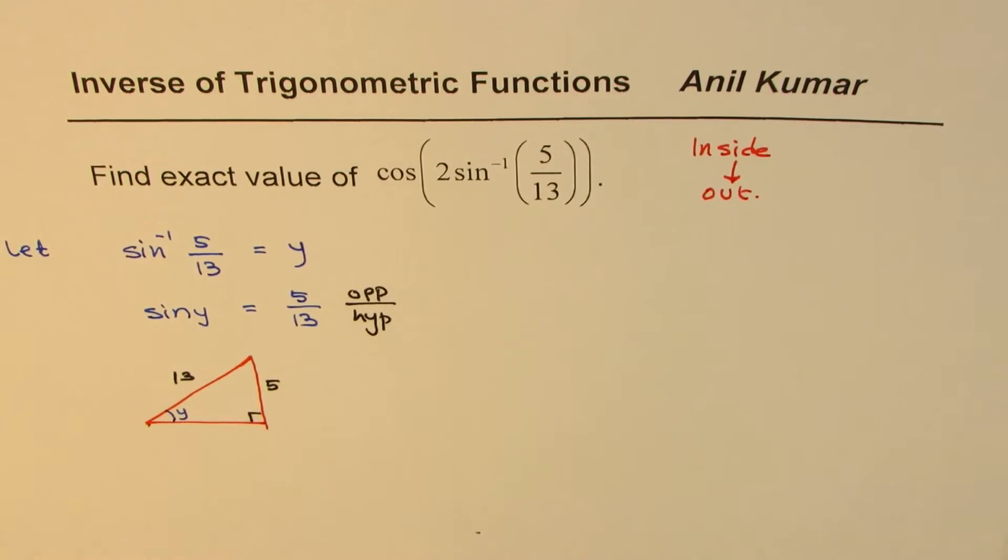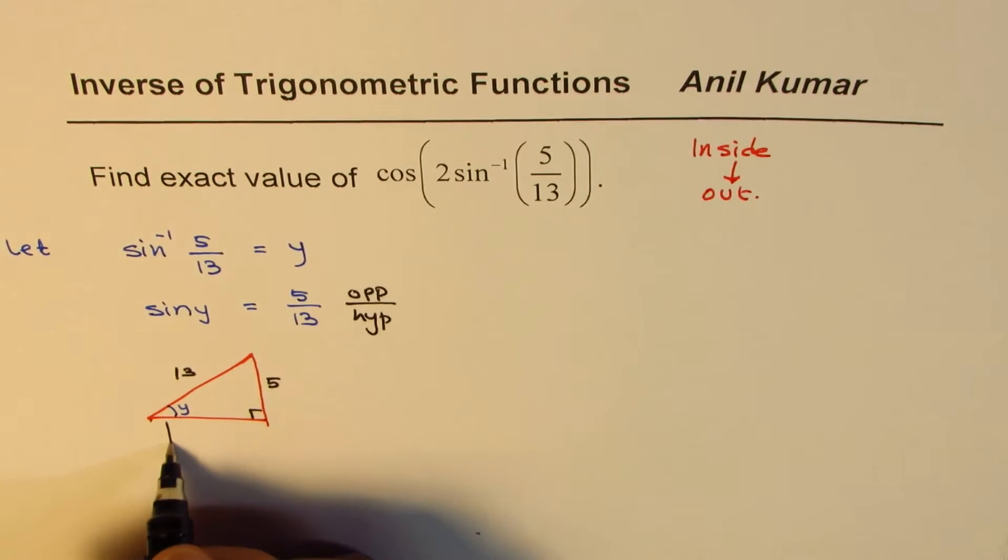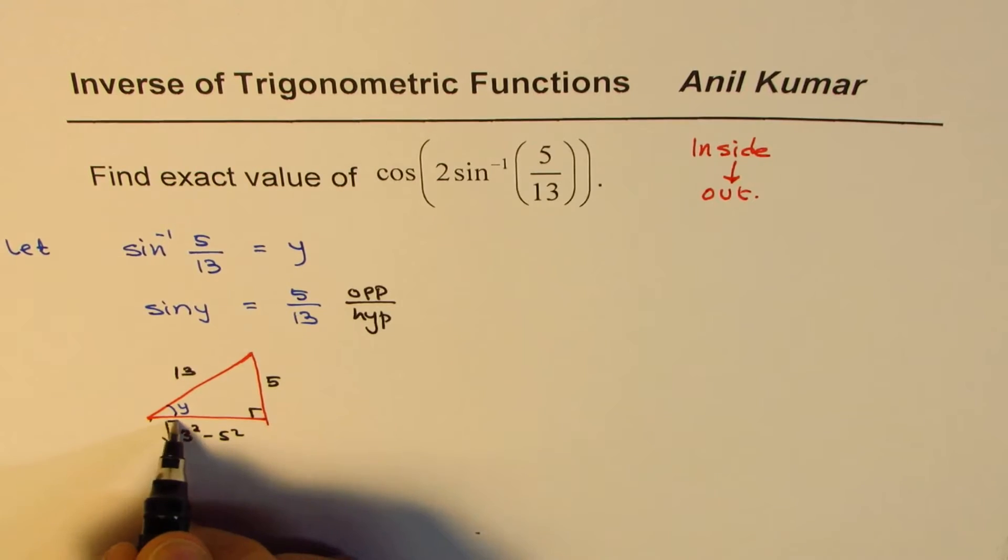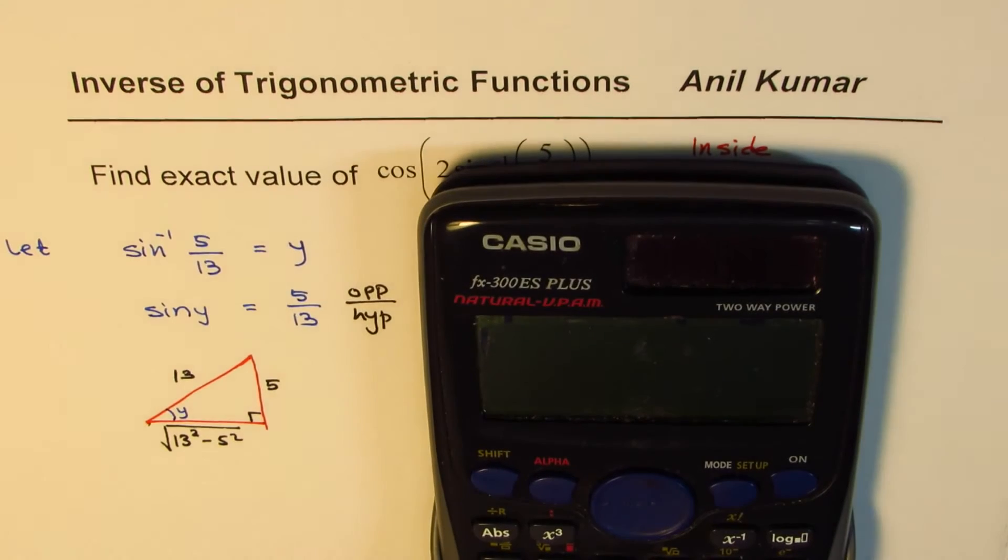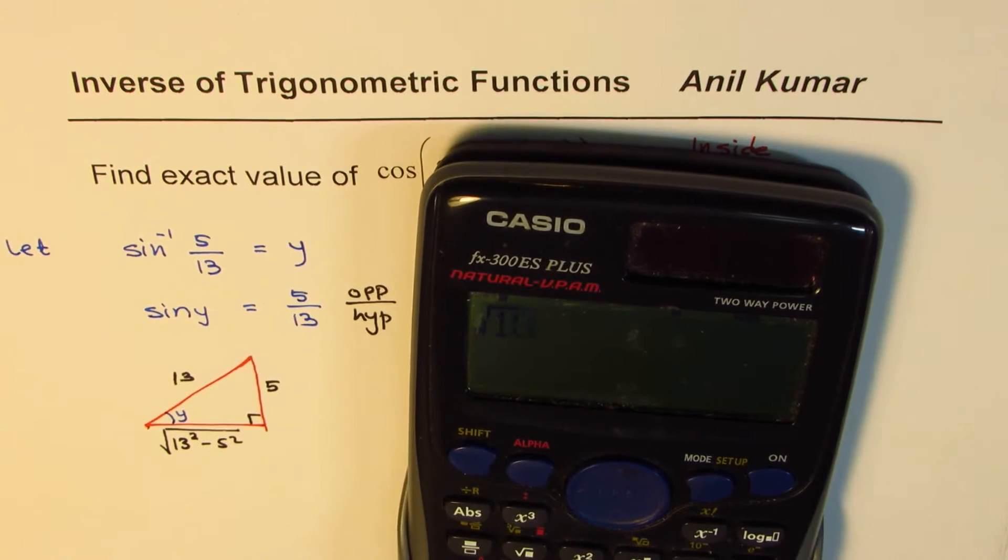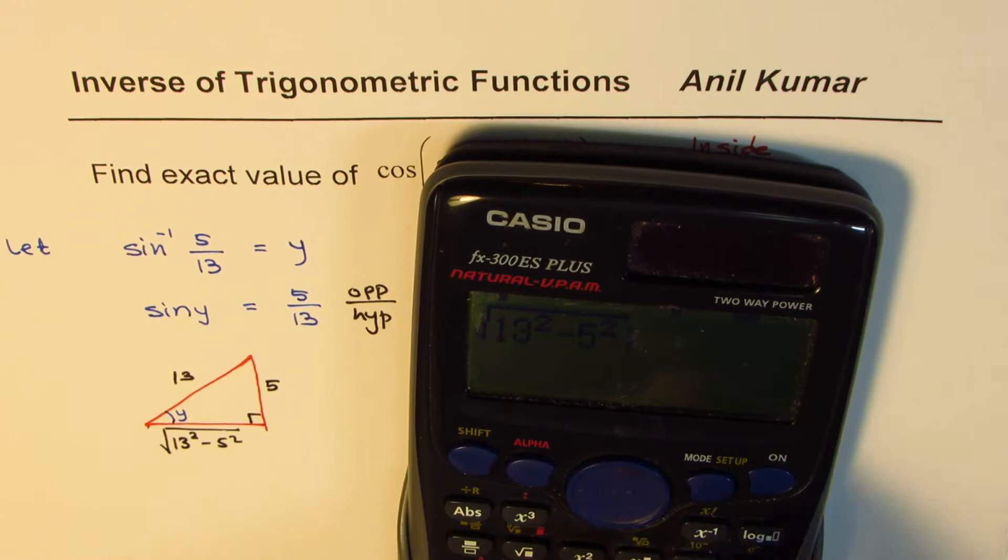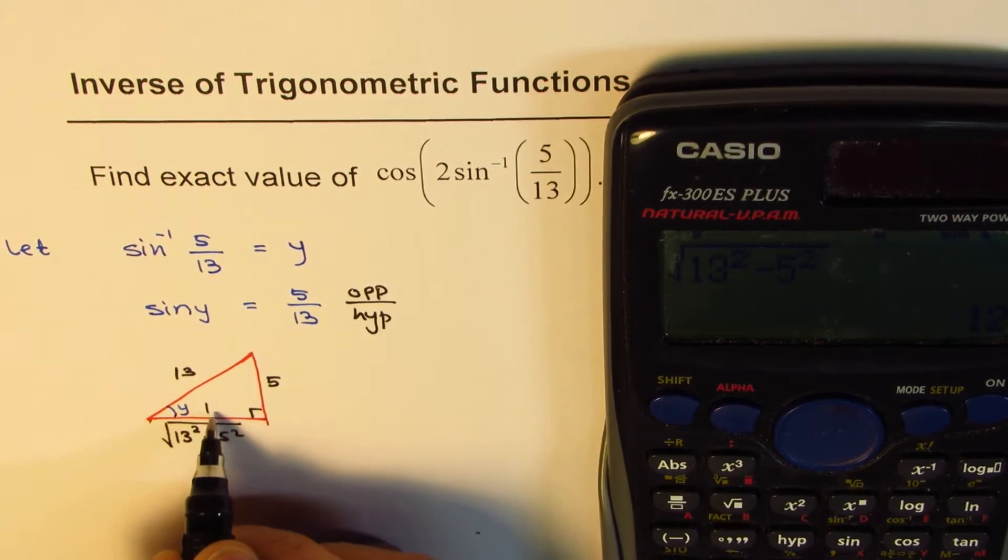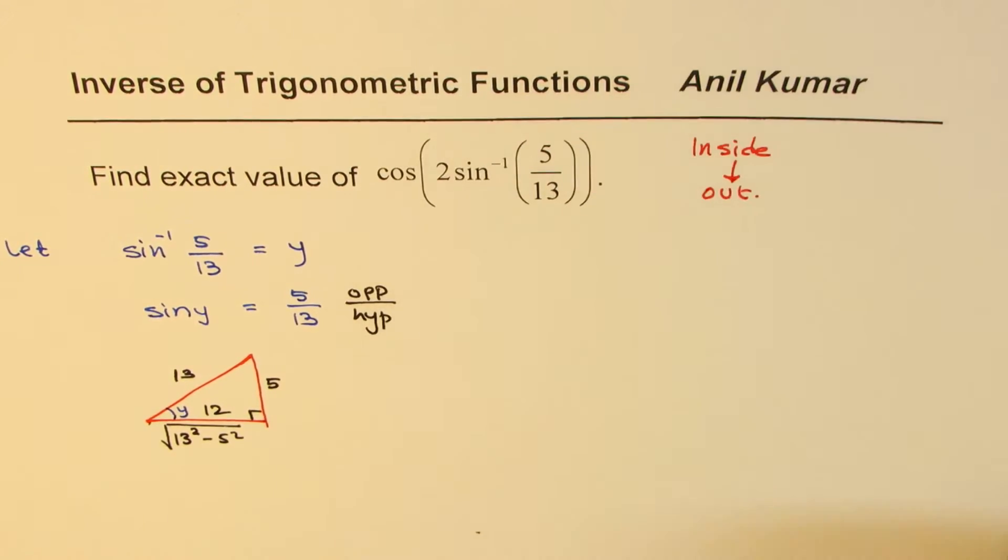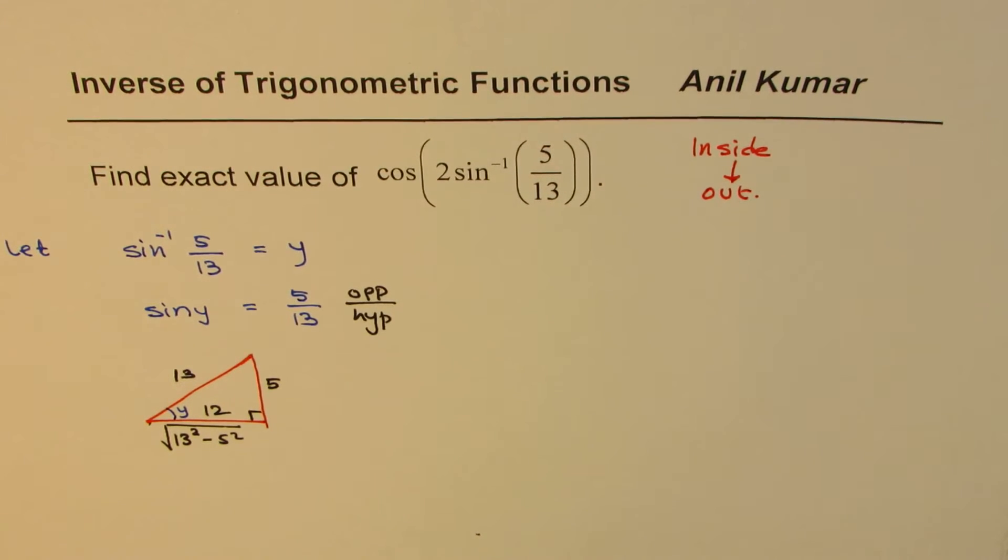Now what is the base here or the adjacent side? It is equal to square root of 13 squared minus 5 squared. So let's calculate this value also. So it is square root of 13 squared minus 5 squared. So this is equal to 12. So the adjacent side is 12.